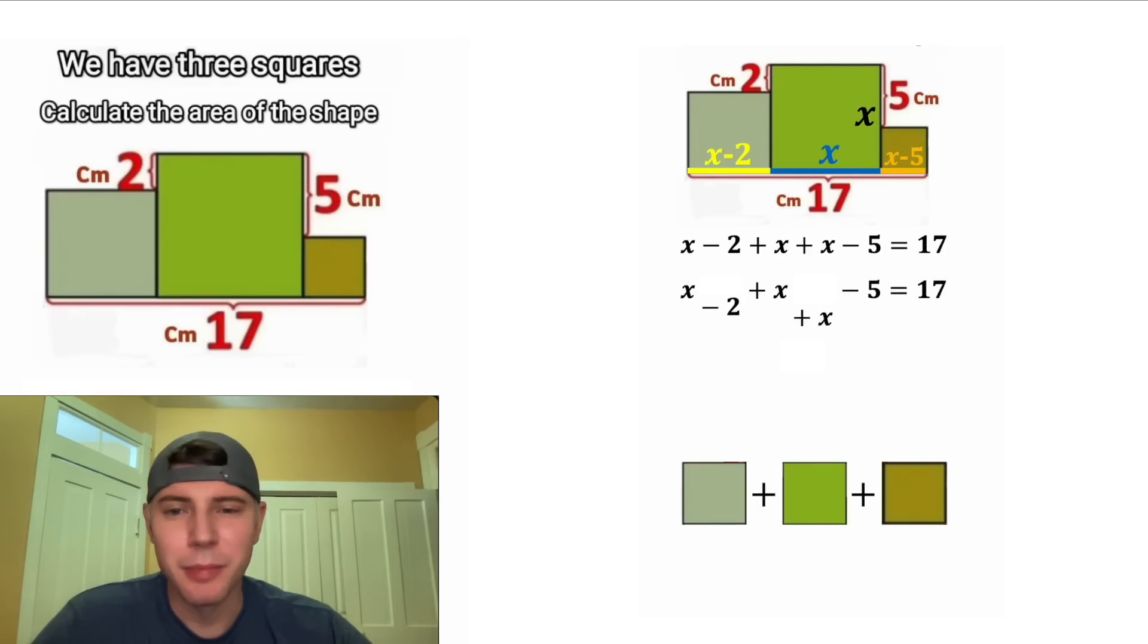We can copy it down and combine like terms. x plus x plus x is 3x, and negative 2 minus 5 is negative 7. Next, we can add 7 to both sides of the equation. On the left-hand side, we're left with 3x, and on the right-hand side, 17 plus 7 is 24. And then we can divide both sides by 3, and that'll give us x equals 8.